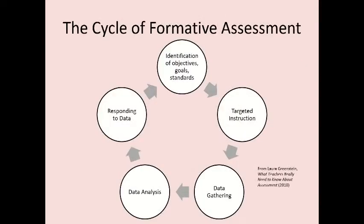The figure shows the cycle of formative assessment as given by Laura Greenstein in her book 'What Teachers Really Need to Know.' The process starts with finding out the objectives, goals, and standards to be attained. Instruction is then targeted to achieve these objectives, data is collected regarding students' understanding, and feedback is given accordingly. Feedback calls the attention of learners to their errors and weaknesses. Formative assessment is therefore a systematic way of directing the process of teaching and learning.